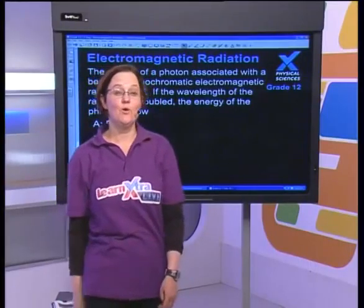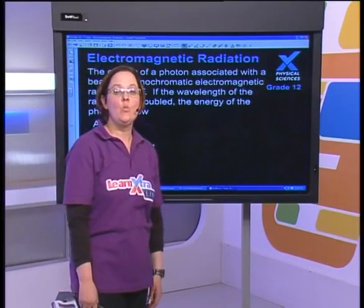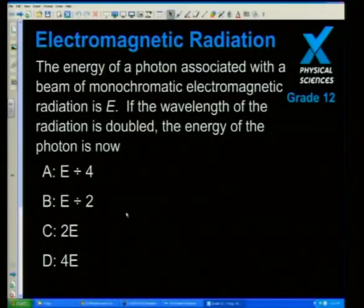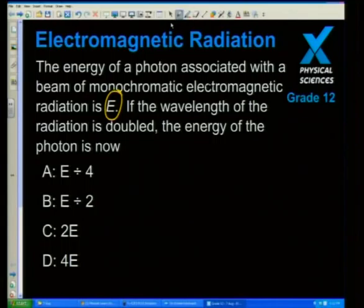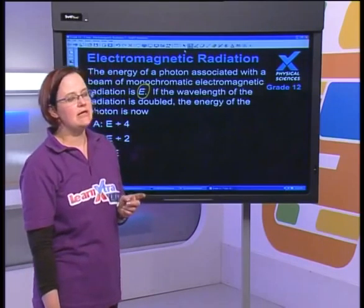Before we jump right in, here is your challenge question. The energy of a photon associated with a beam of monochromatic electromagnetic radiation is E. If the wavelength of the radiation is doubled, the energy of the photon is: A) E divided by four, B) E divided by two, C) twice the original energy, or D) four times the original energy. We'll look at that — it's related to what you did last week with the photoelectric effect.